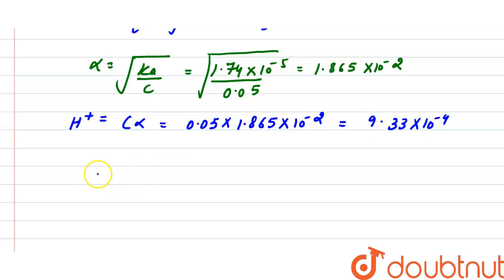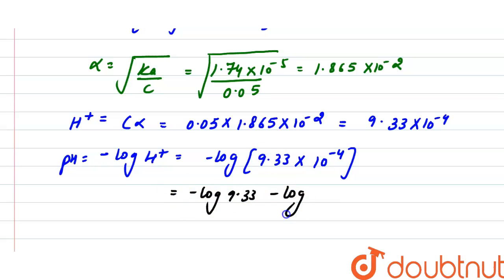As we know, pH = -log[H+]. So pH = -log(9.33 × 10^-4) = 4 - log(9.33). The log of 9.33 is approximately 0.97.